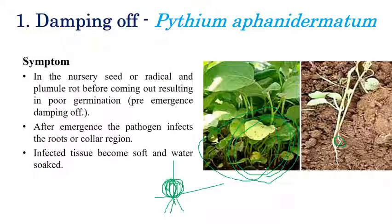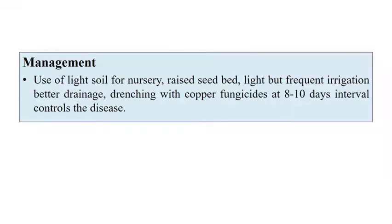The seedling eventually dies. For management, use light soil for the nursery and raised seed beds — raised seed beds are the best management practice for controlling damping off, not only in Brinjal but also in tomato and other crops. Frequent irrigation with better drainage facilities, along with drenching with copper fungicides such as Bordeaux mixture or Burgundy mixture at 8 to 10 day intervals, gives better control.